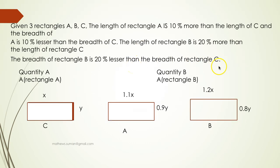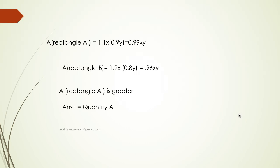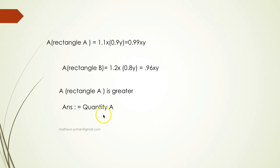The area of rectangle B would be 1.2x into 0.8y, that is 0.96xy. Comparing the two, the area of rectangle A is greater, so the answer is quantity A.